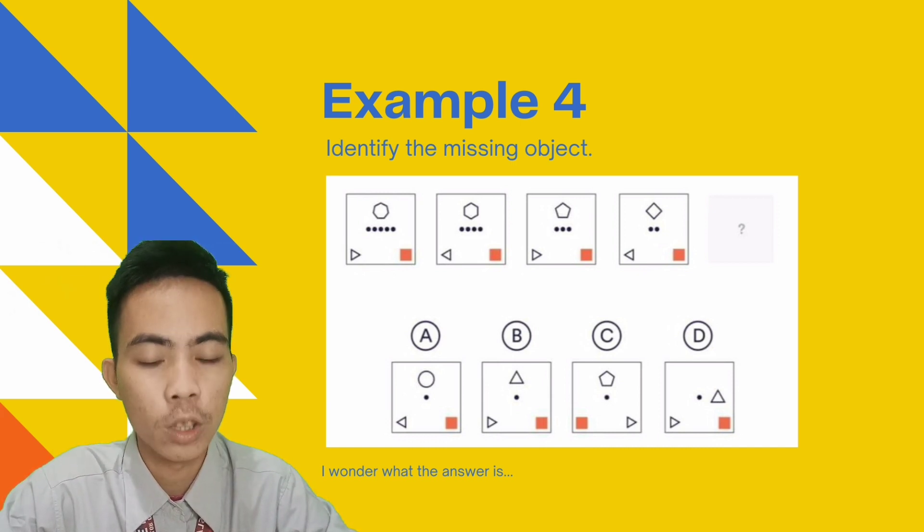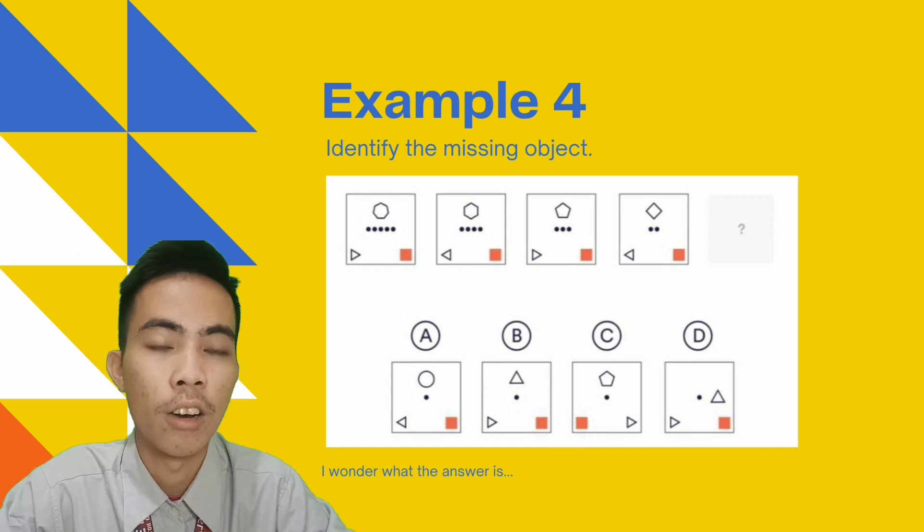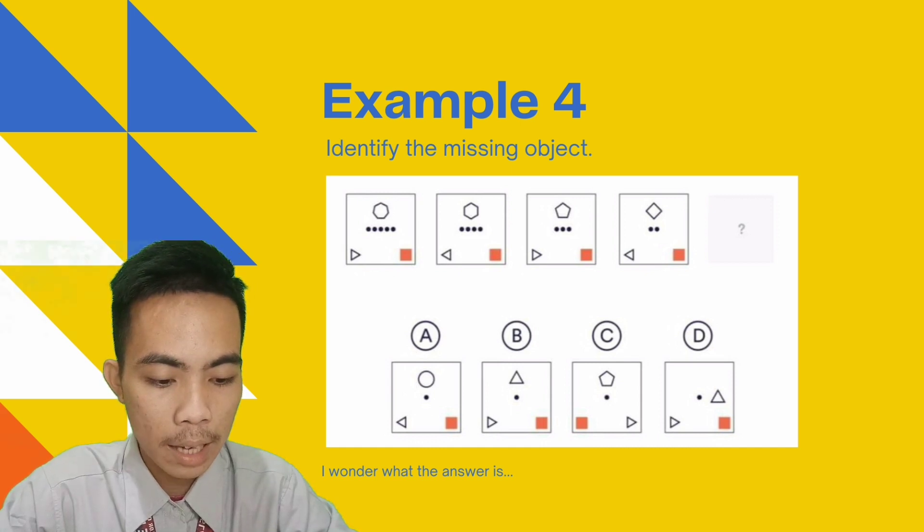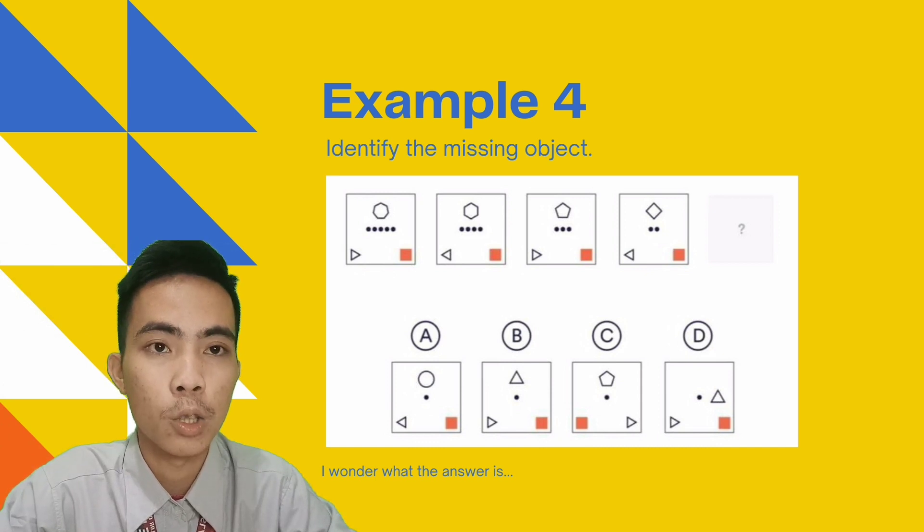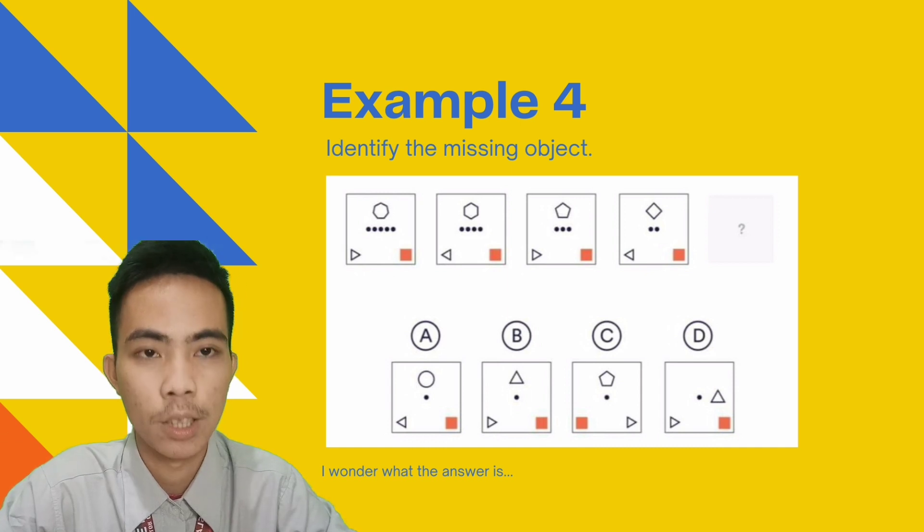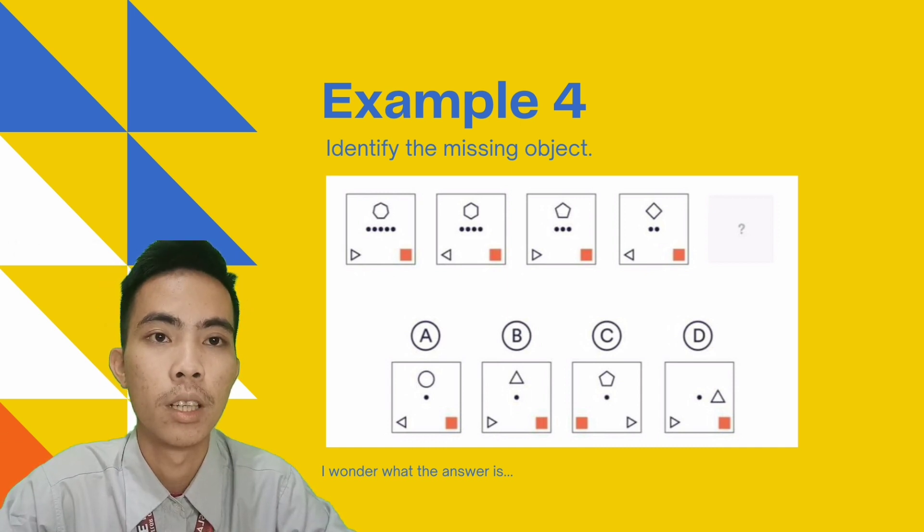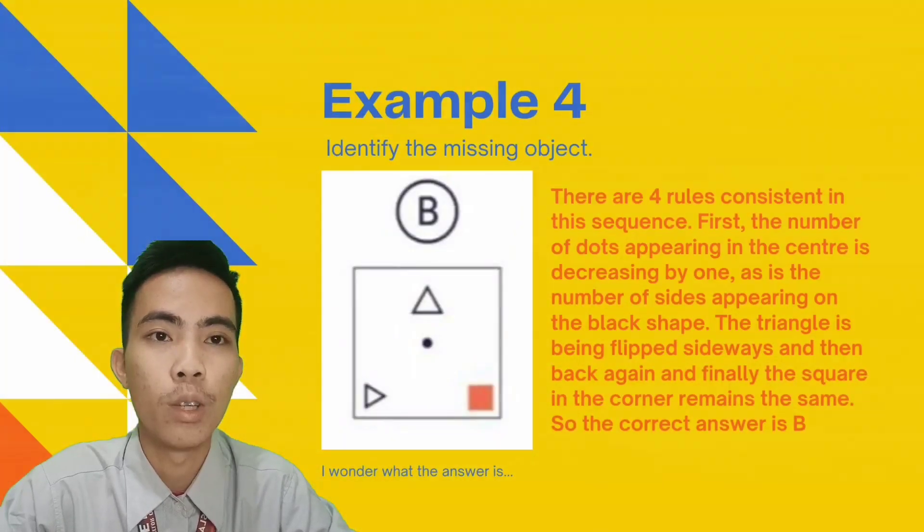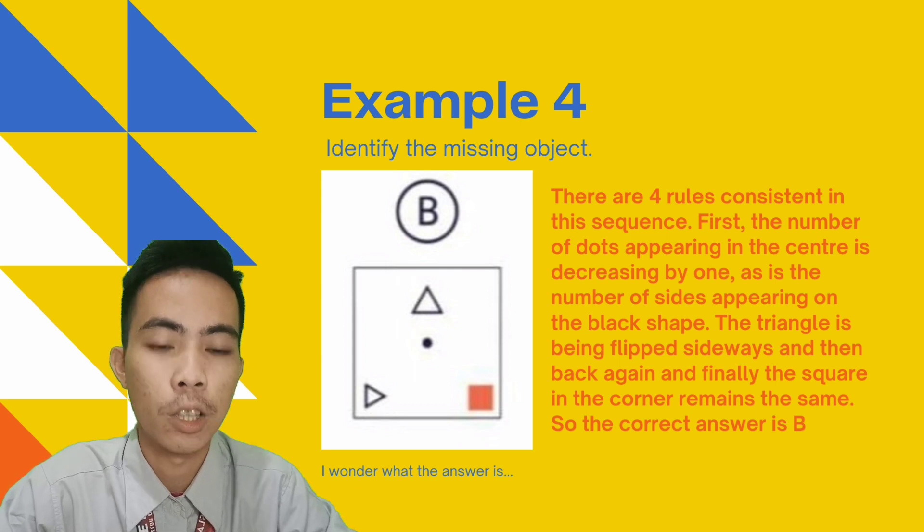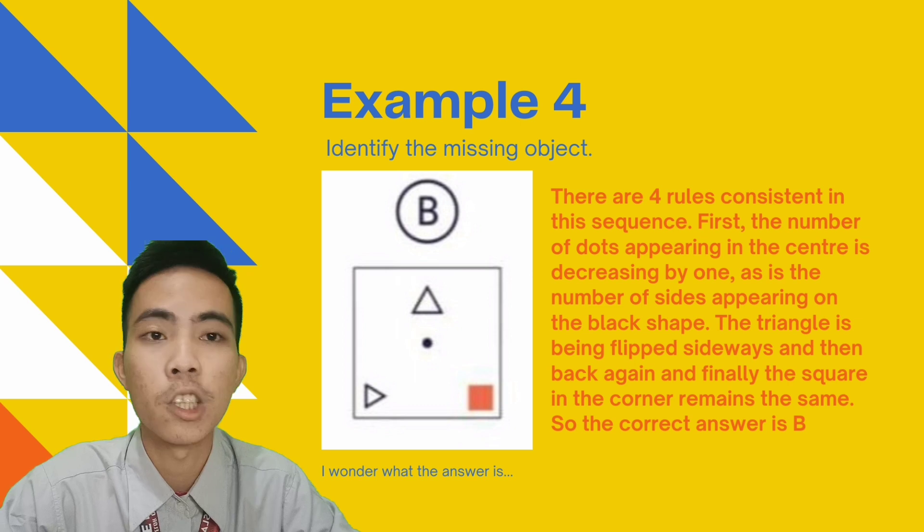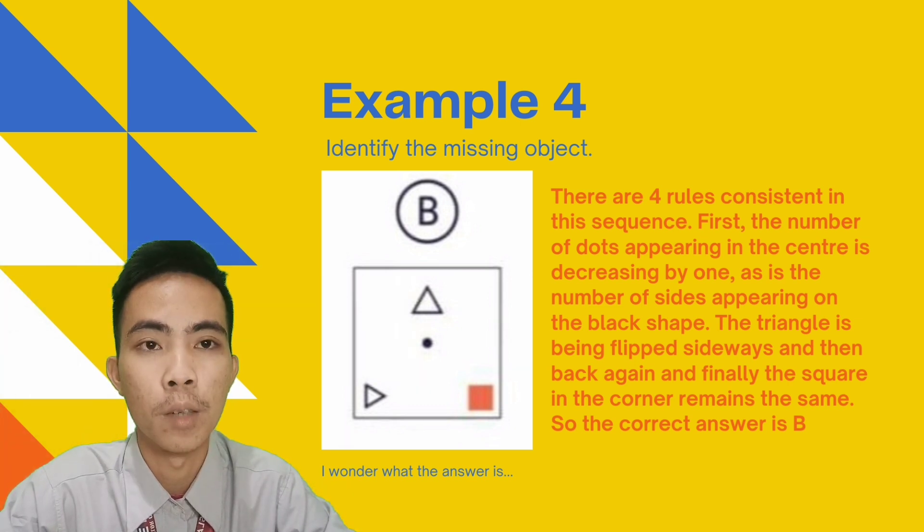Let us go to the fourth choice which has the triangle which is in accordance to the idea of decreasing numbers of sides and corners of the shapes. And the small triangle and the small orange box in the bottom corners of the box are in the right place. With all of that, we can conclude that the second choice or choice B is our figure because choice B satisfies all of the requirements to become the next figure we are looking for.